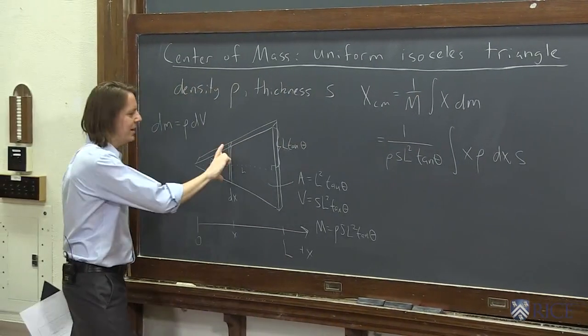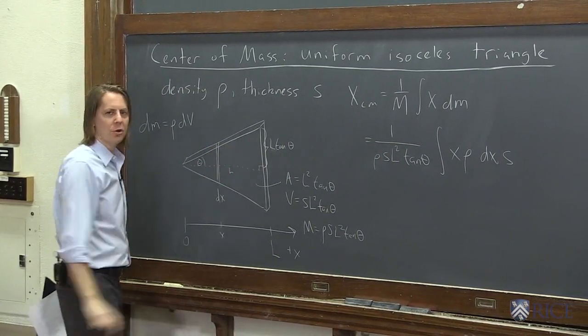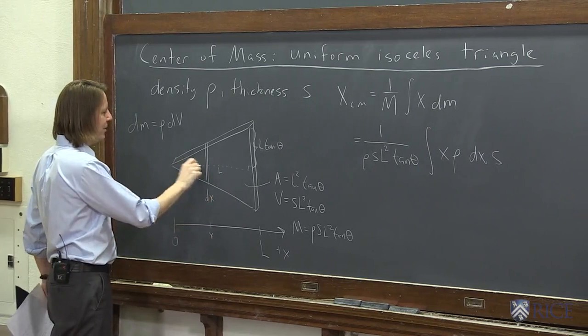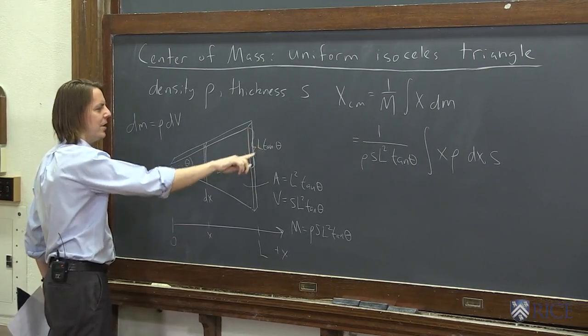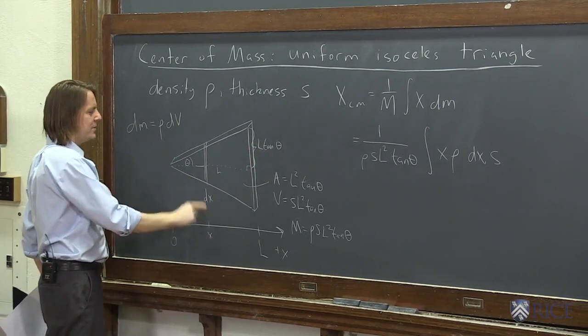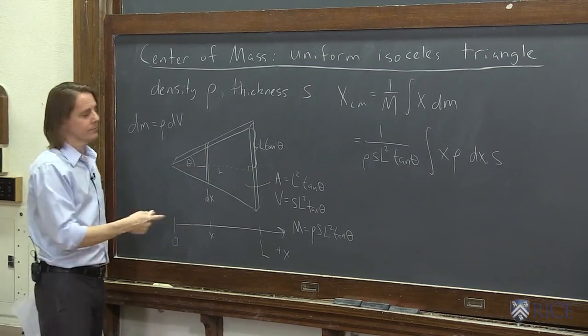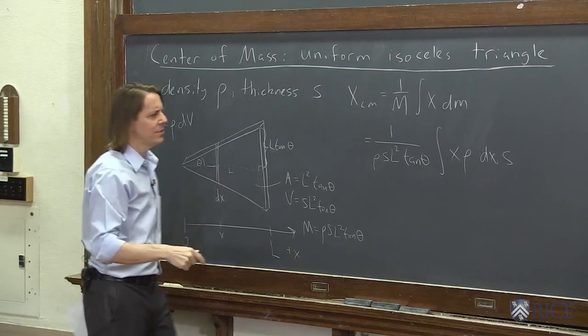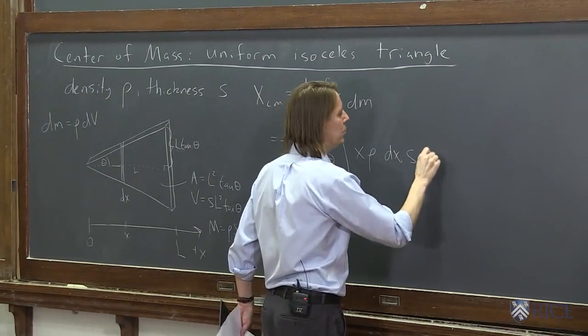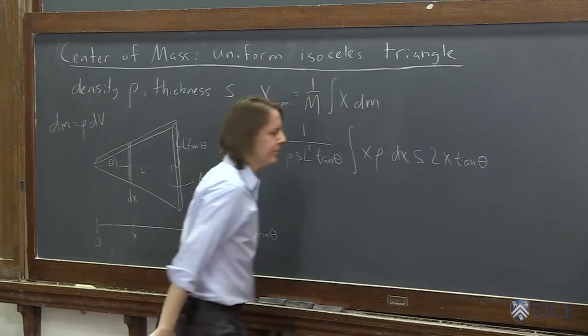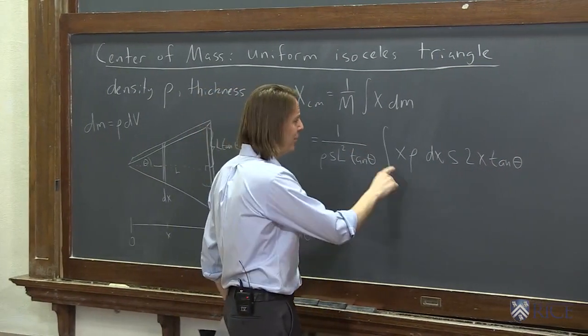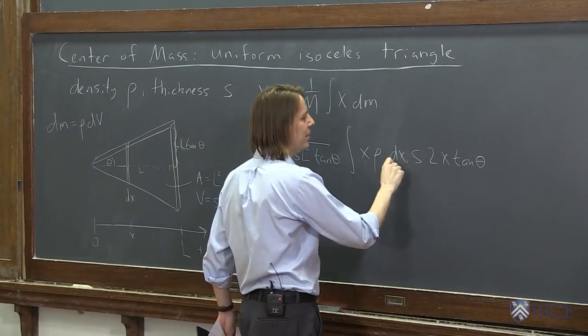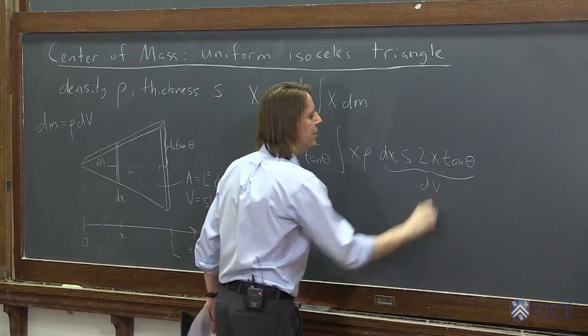And then the hard one is the height. Because the height is going to change as we go from X equals 0 to X equals L. But it's not too bad. It's a triangle. We actually talked about it. Here, this was L tangent theta. If you only made it to some region X, it's X tangent theta. So that height is X tangent theta. But there's two of them. So it's 2X tangent theta. So if that blew your mind, all this was was our X. DM is rho. And this whole thing is DV. It's just the volume.